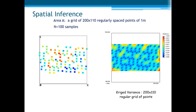And this is the resulting Kriging variance. We can identify the areas with low influence of samples, showing high Kriging variance. Also, we can easily see the spatial location of samples — those blue spots — with null Kriging variance.